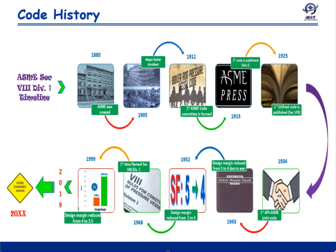Then in 1915, the BPVC committee issued its first code, which later became the Power Boiler Code, ASME Section 1.